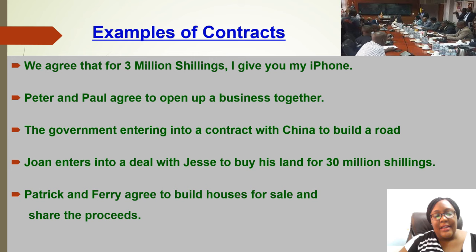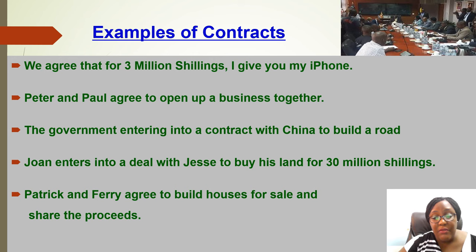This slide gives other examples of kinds of contracts. There are contracts between governments — for example, China agrees with Uganda to construct a road and Uganda is to pay back. Or it could be a contract in your house — you agree with someone to bring bins to your house every month. Or you enter into a contract to buy land. Or you agree with a friend to run a business, sell things, and split the profits. All those are examples of contracts — simply, any agreement.